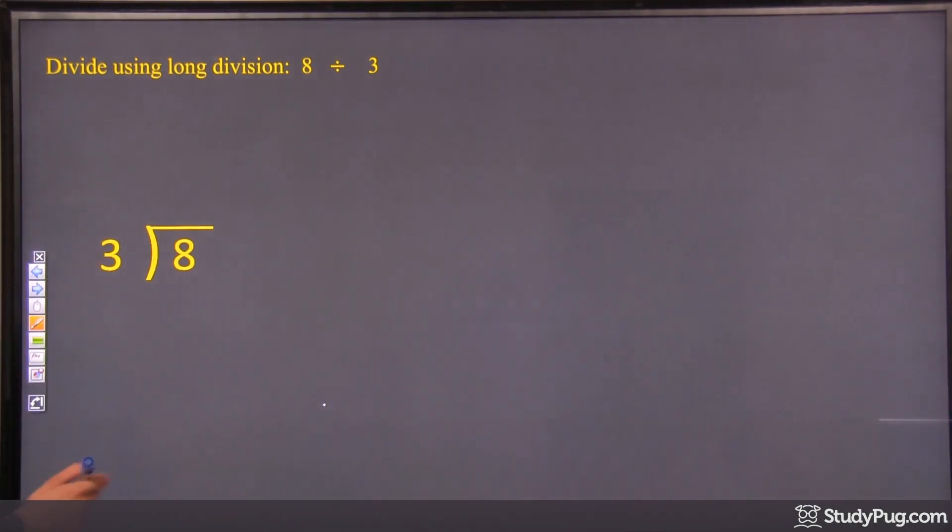So when we do long division, we start at the largest place value over here. We do 8 divided by 3, or how many 3's fit in 8, right?